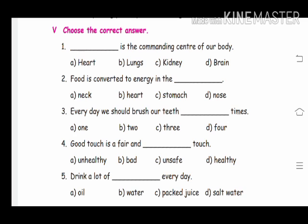Fifth one — drink a lot of dash everyday. Options: A-Oil, B-Water, C-Packet Juice, D-Salt Water. Answer children... yes, water. Good. Recap: One — brain is the commanding center. Two — food is converted to energy in the stomach. Three — brush teeth two times a day. Four — good touch is fair and healthy. Five — drink a lot of water everyday.